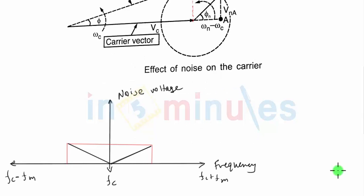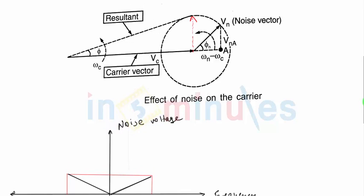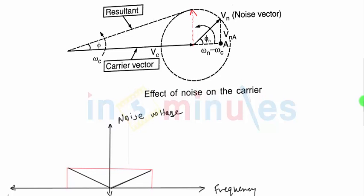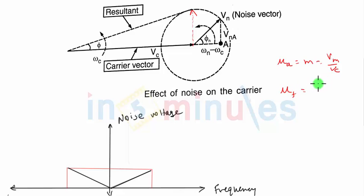Now discussing the effect of noise in the FM signal by bringing modulating frequency into the picture. If you remember, in case of amplitude modulation, when we defined modulation index m or mu_a, it is Vm by Vc and is completely independent of modulating frequency. But in case of FM, the modulation index is nothing but ΔF upon FM, so as modulating frequency increases, modulation index in FM will decrease.